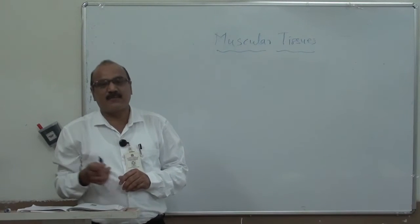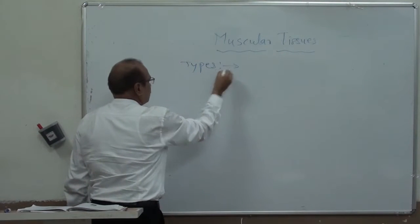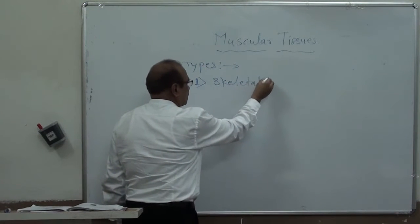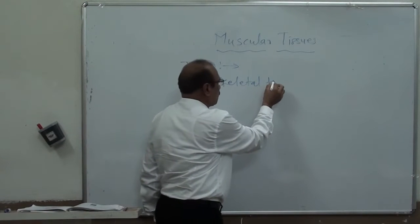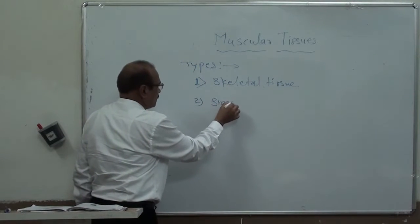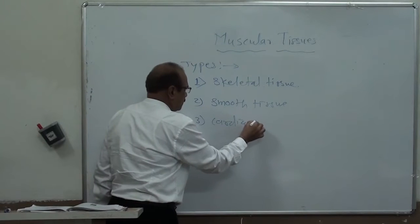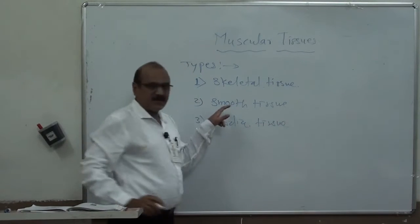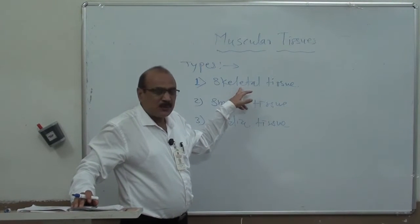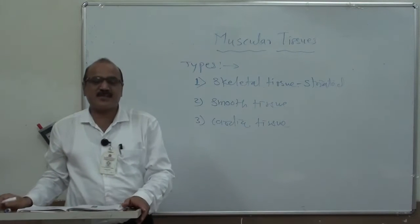There are three types of muscular tissues found in the body. The first one is Skeletal or Skeletal Muscular Tissue. The second one is Smooth Tissue and the third one is Cardiac Tissue. Skeletal tissue is also called Striated type of tissue, because of the presence of striations.